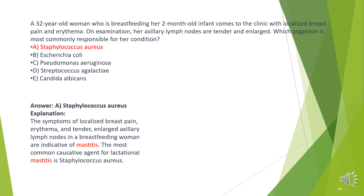The answer is A. Staphylococcus aureus. The symptoms of localized breast pain, erythema, and tender enlarged axillary lymph nodes in a breastfeeding woman are indicative of mastitis. The most common causative agent for lactational mastitis is Staphylococcus aureus.